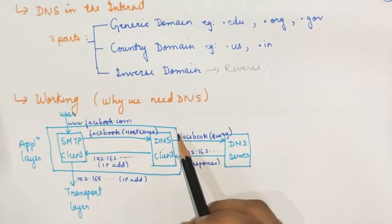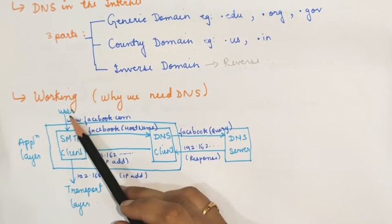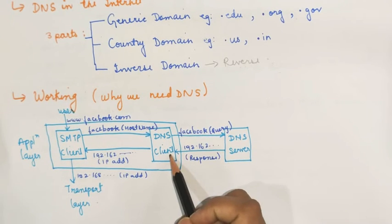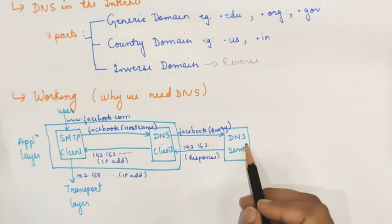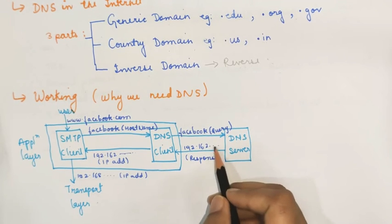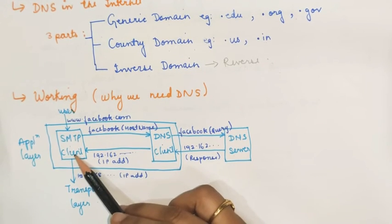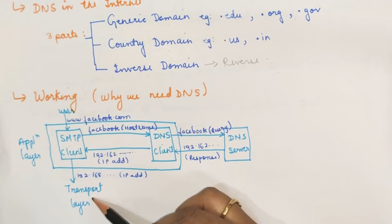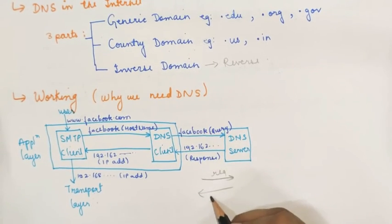For example, if we want to access facebook.com, the user writes www.facebook.com in the URL. Then the DNS client sends the request to the domain name system server. The server searches for the respective IP address of Facebook — for example, 192.168.162.something — and that response is forwarded back to the client, then to the transport layer, which is responsible for transporting the information.